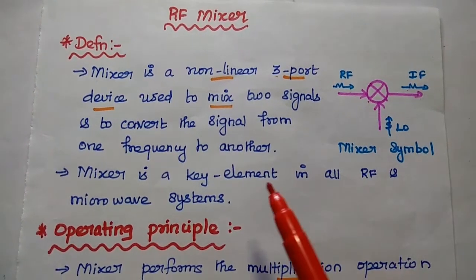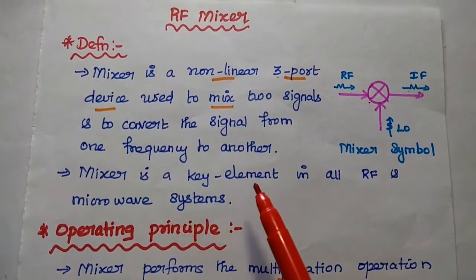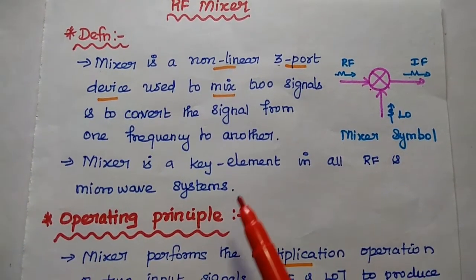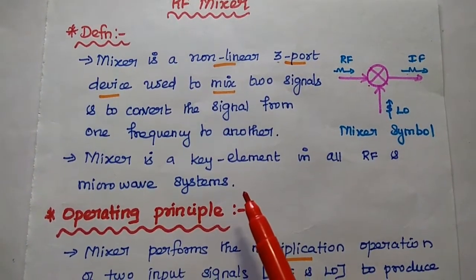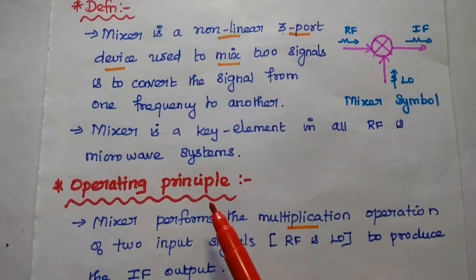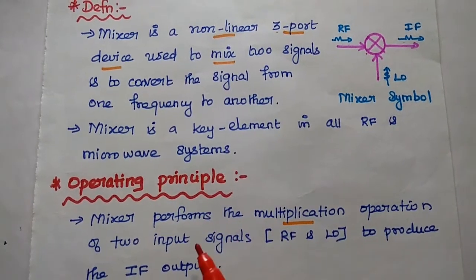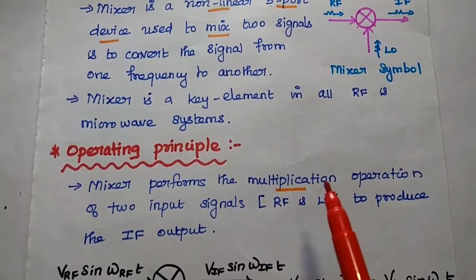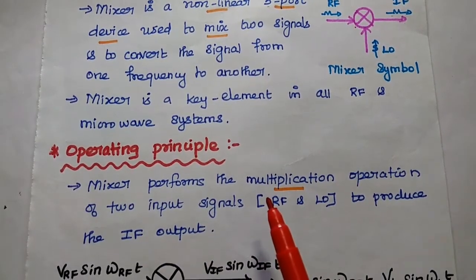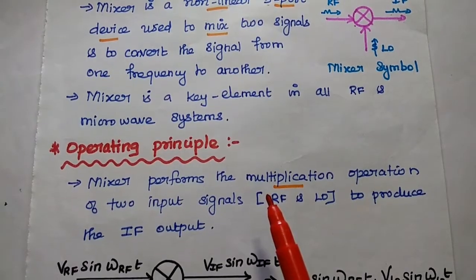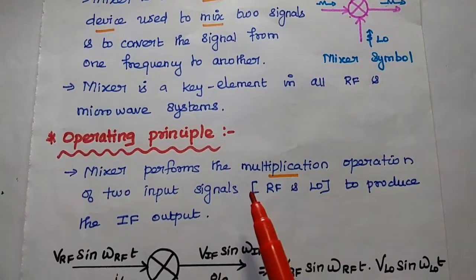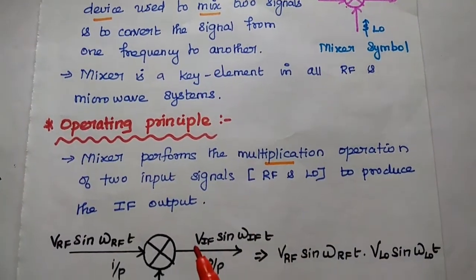The mixer is mainly used to convert the signal from one frequency to another. It is an important element widely used in all RF and microwave systems, on both the transmitter and receiver side.